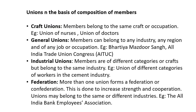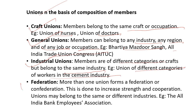Unions based on composition: Craft unions belong to the same craft or occupation, like unions of nurses, doctors, or policemen. General unions can belong to any industry, region, country, or occupation — members are workers from multiple industries, as in the All India Trade Union Congress. Industrial unions have members of different categories of craft but belonging to the same industry, such as a union of different categories of workers in the cement industry. A federation is a union of more than one trade union — also called a union firm, federation, or confederation.